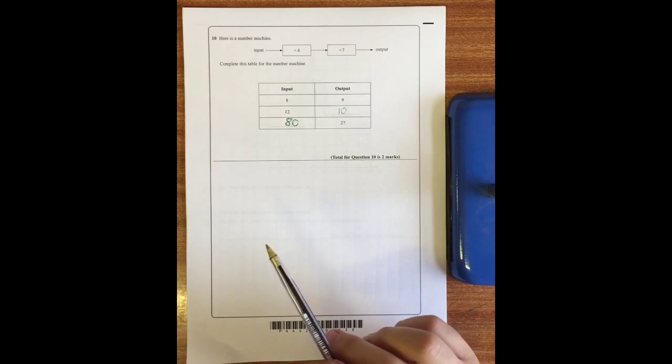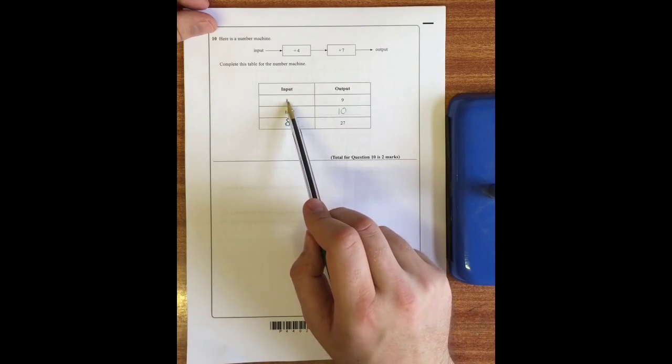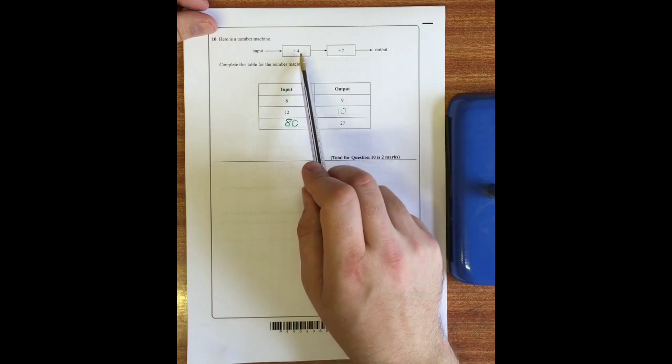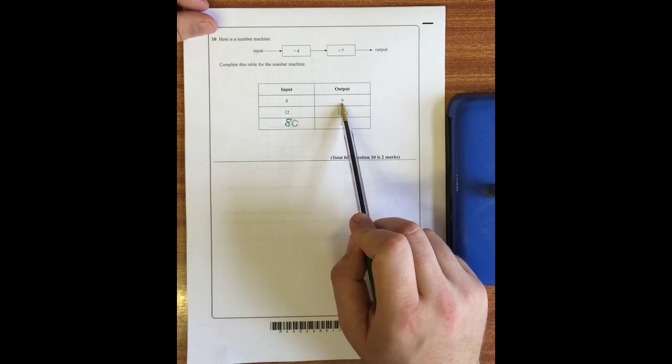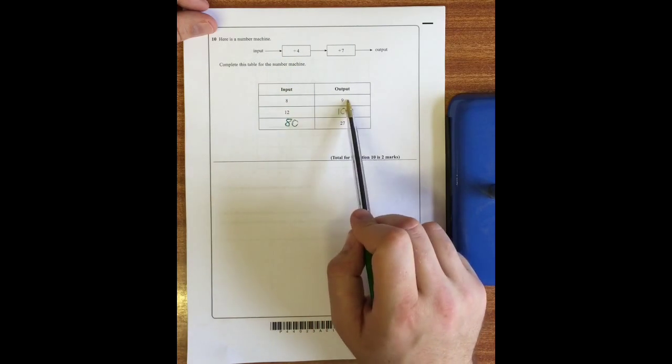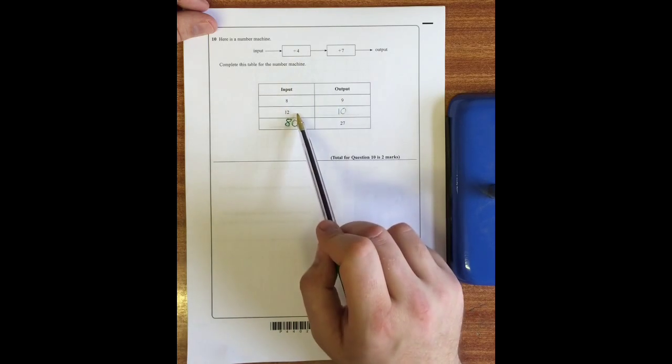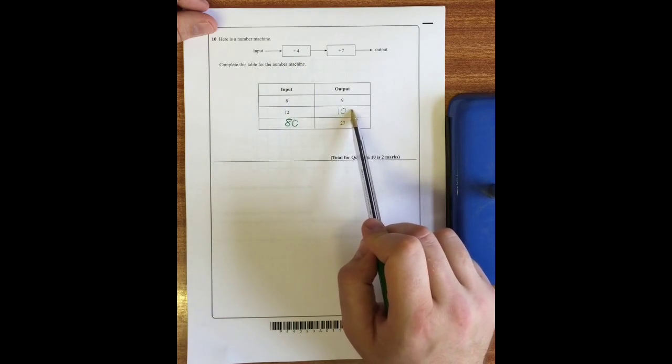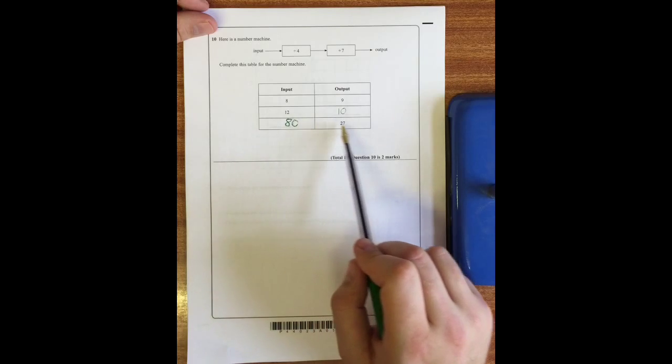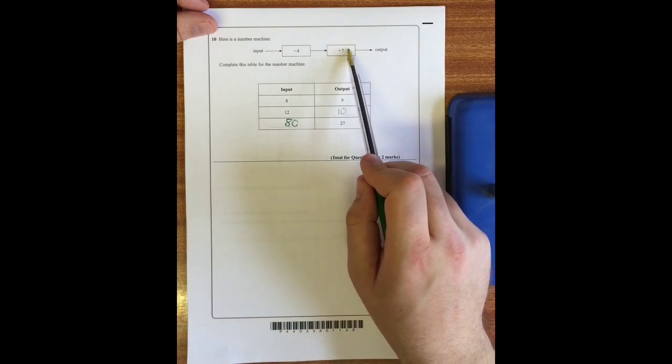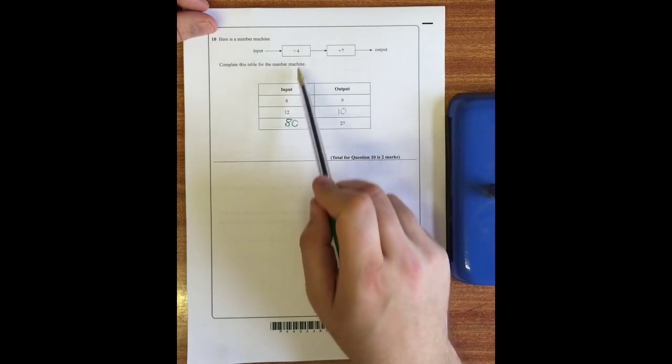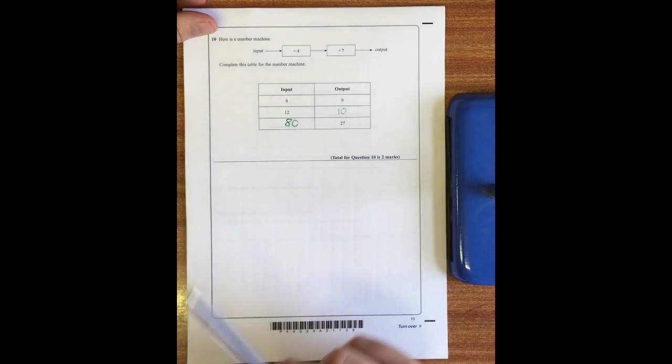Question 10: it's a number machine. Complete the table. You can see here that we're going to divide by four, so eight divided by four is two, then add seven gives us nine. 12 divided by four is three, add seven gives us 10. And then to work backwards we need to start with 27 and subtract 7 which gives us 20, and times by 4 which gives us 80.